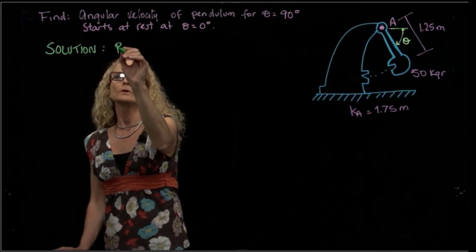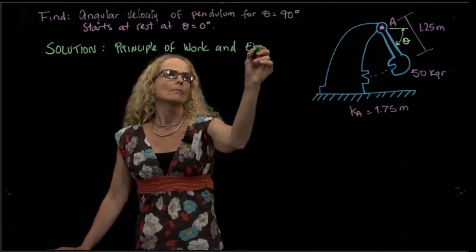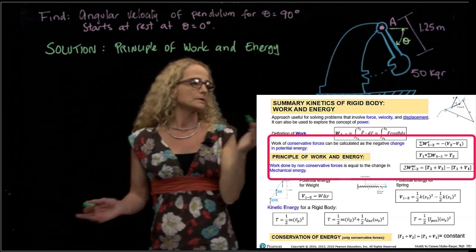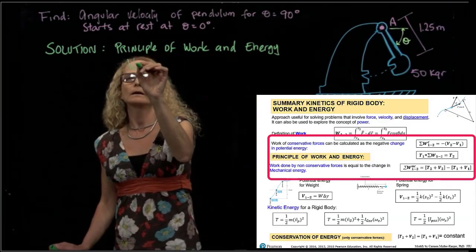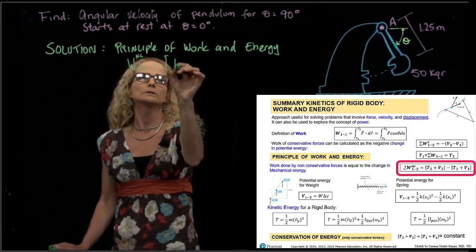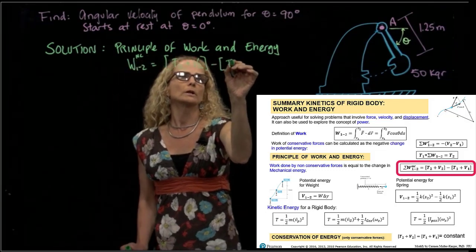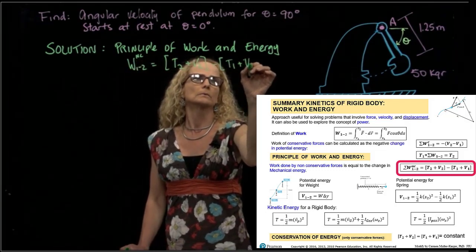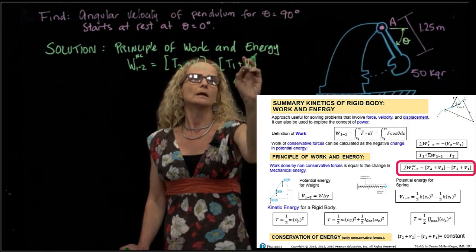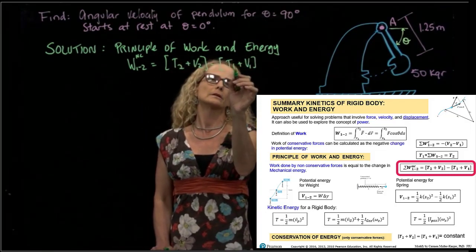So the principle of work and energy, there's several ways to write it, but the way that I like to write it is that the work done by non-conservative forces is the total energy in a second position minus the total energy in the first position.